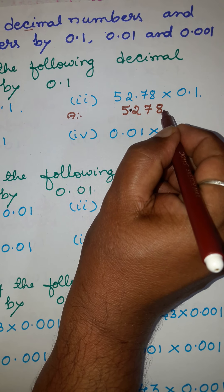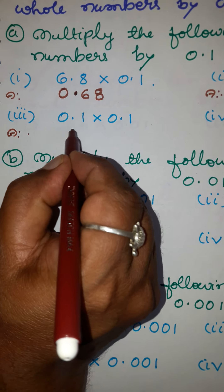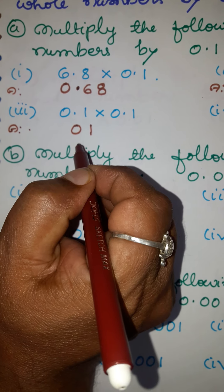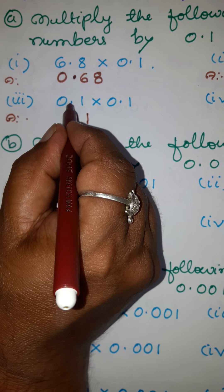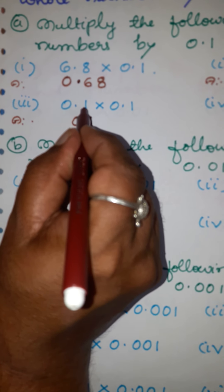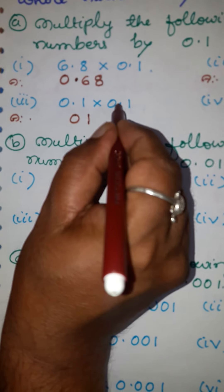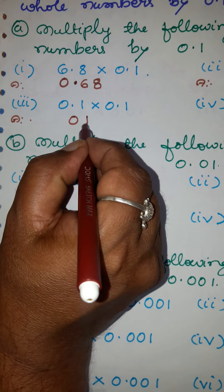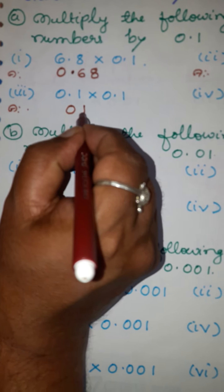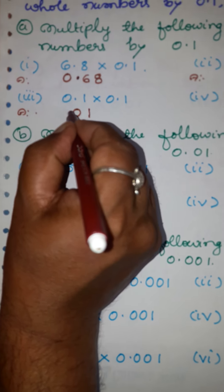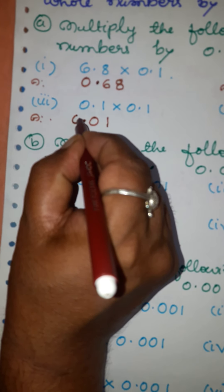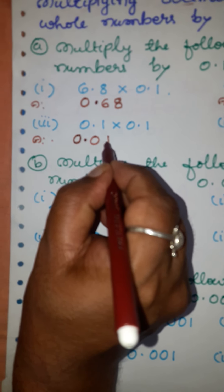Third example: read this number as 01, ignoring the decimal point. After the decimal point there is one place; here after the decimal point also one place. One plus one is two. Move two places from right to left — one, two — and put the decimal point. Add a zero here. The answer is 0.01.